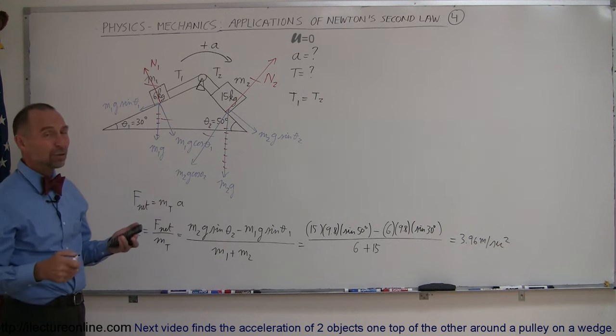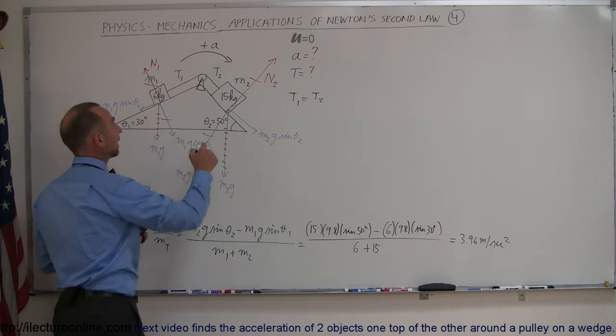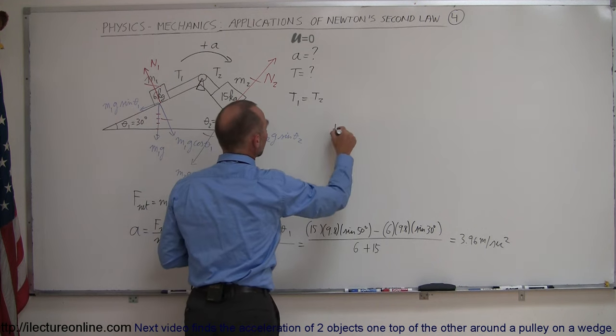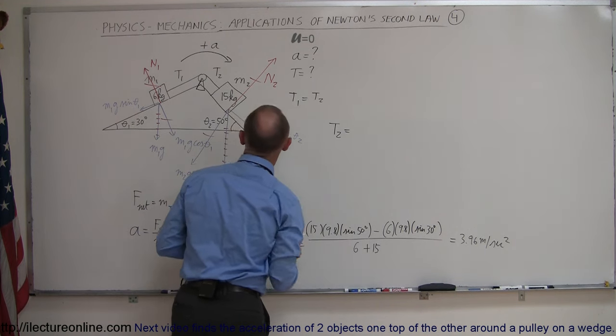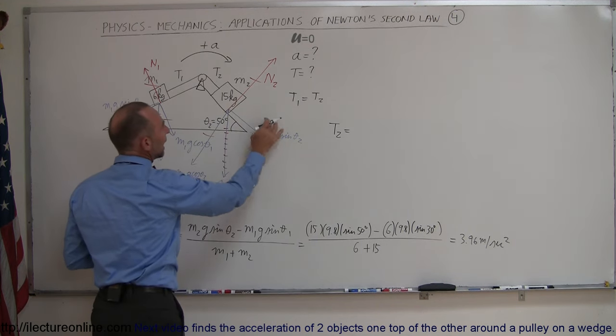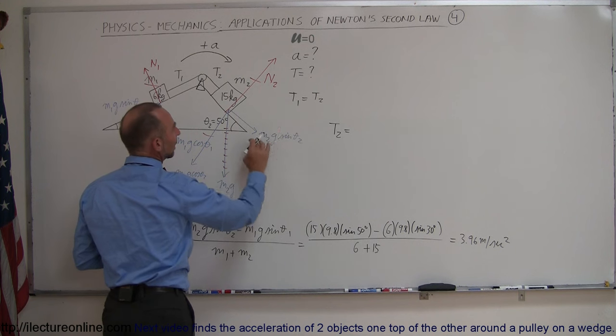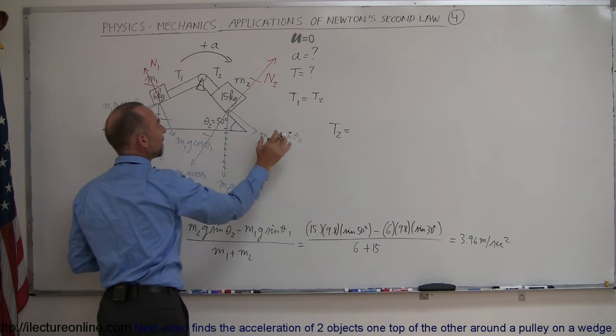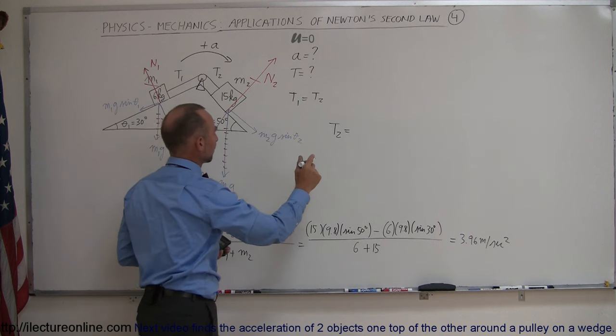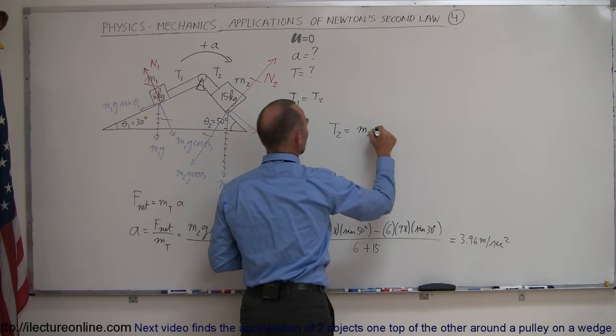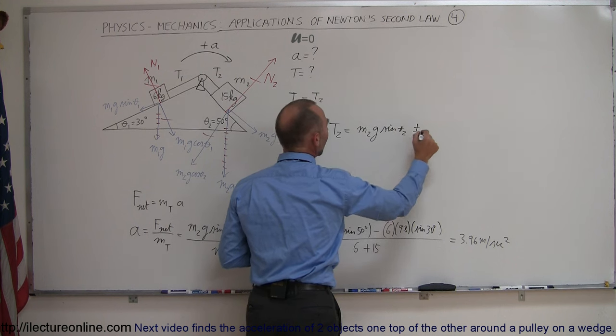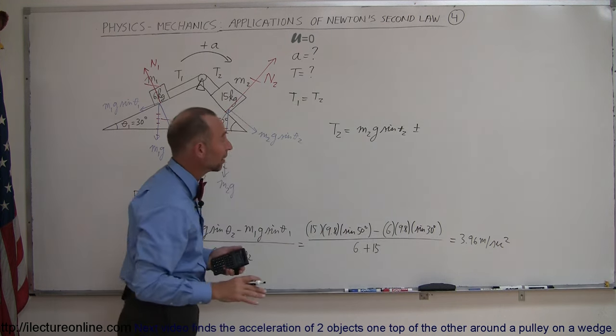All right so what we can do now is we can simply say that the tension 2, I can do either way but I'll start with tension 2. Tension 2 is equal to the weight component along the incline which is m2 g sine theta, so it needs to have at least enough to hold up against this weight. So m2 g sine of theta 2 plus or minus, and we'll decide if it's plus or minus.